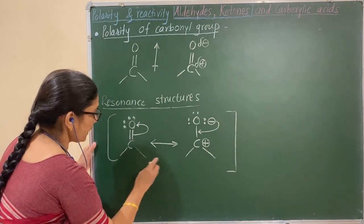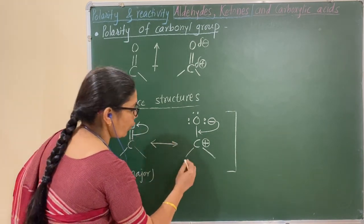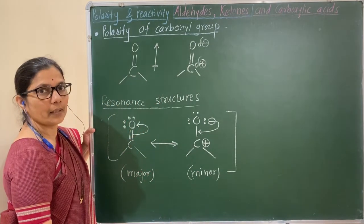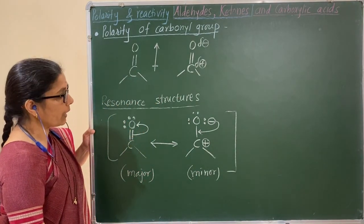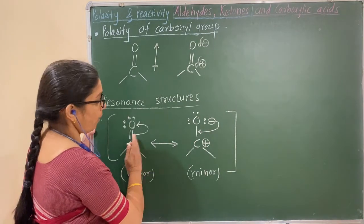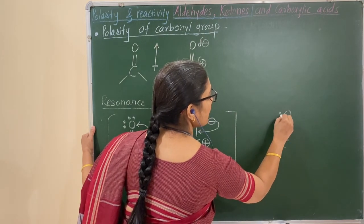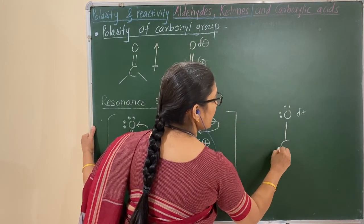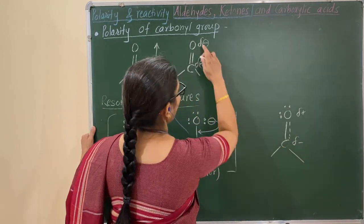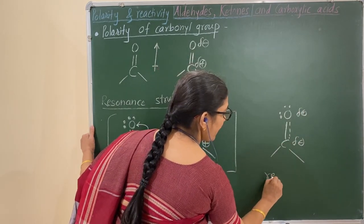Out of these two resonance structures, the first structure is present in a major proportion and the second is comparatively minor. You know that resonance structures have a resonance hybrid. The resonance hybrid here shows delta positive on the carbon and delta minus on the oxygen — this is the resonance hybrid structure.